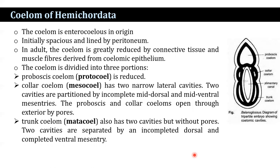The coelom is divided into three portions. The proboscis coelom, known as protocoel, is reduced. The collar coelom, known as mesocoel, has two narrow lateral cavities partitioned by incomplete mid-dorsal and mid-ventral mesenteries.